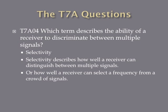Which term describes the ability of a receiver to discriminate between multiple signals? The answer is selectivity. Selectivity describes how well a receiver can distinguish between multiple signals — when there are many people operating in close frequency range, how well a receiver can select a frequency from a crowd of signals. Not to be confused with sensitivity: selectivity discriminates between multiple signals, while sensitivity picks up weak signals.